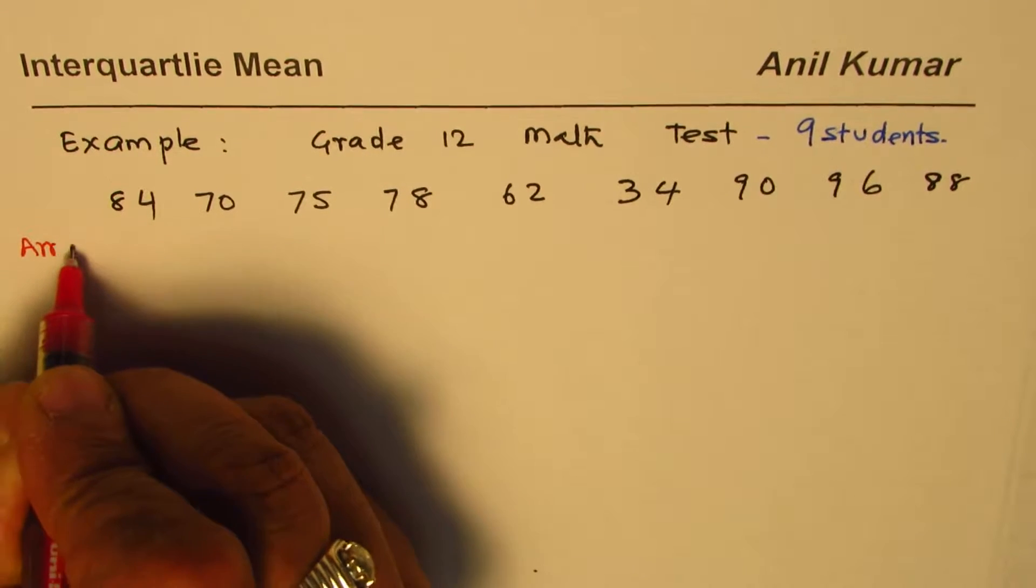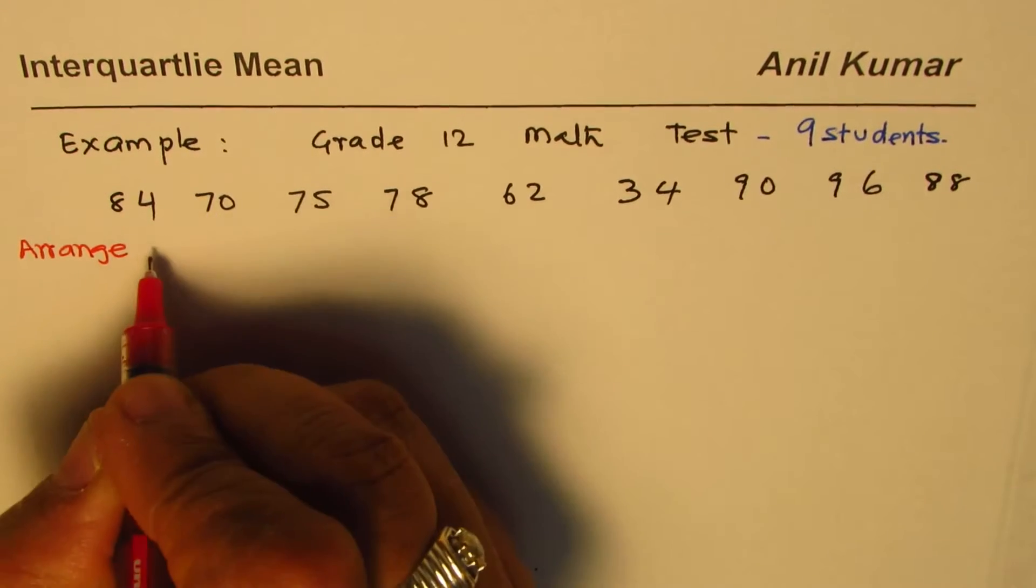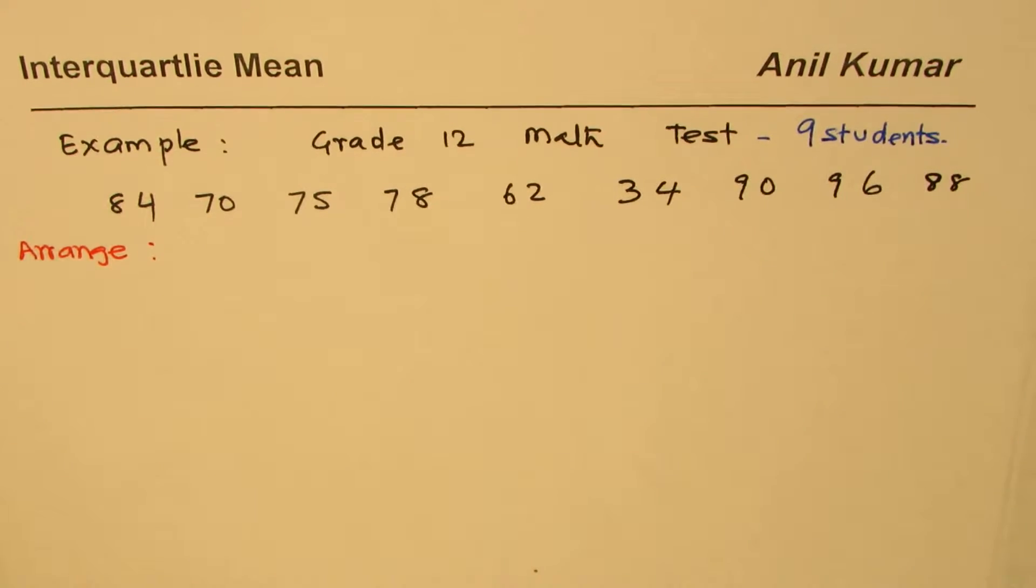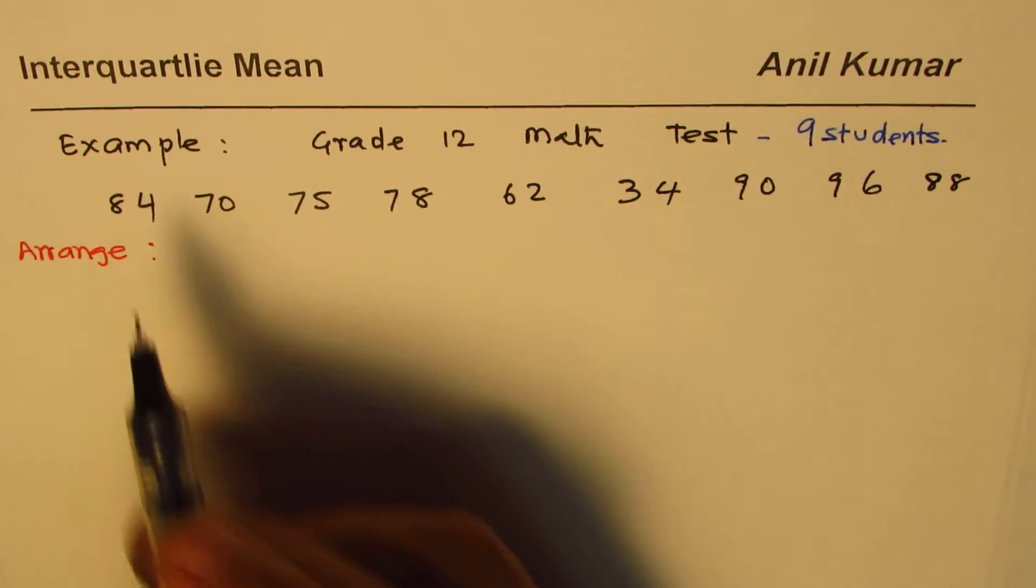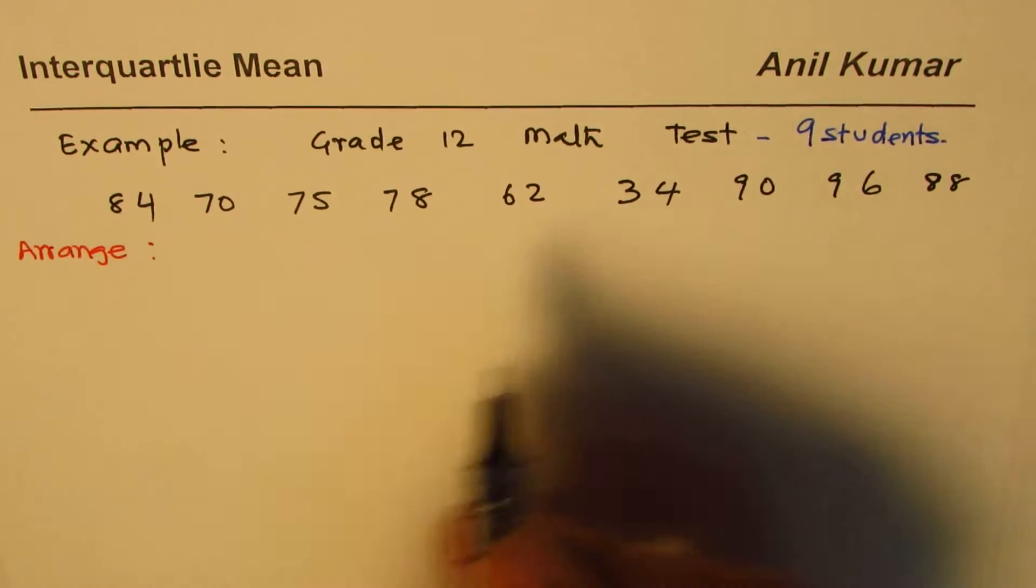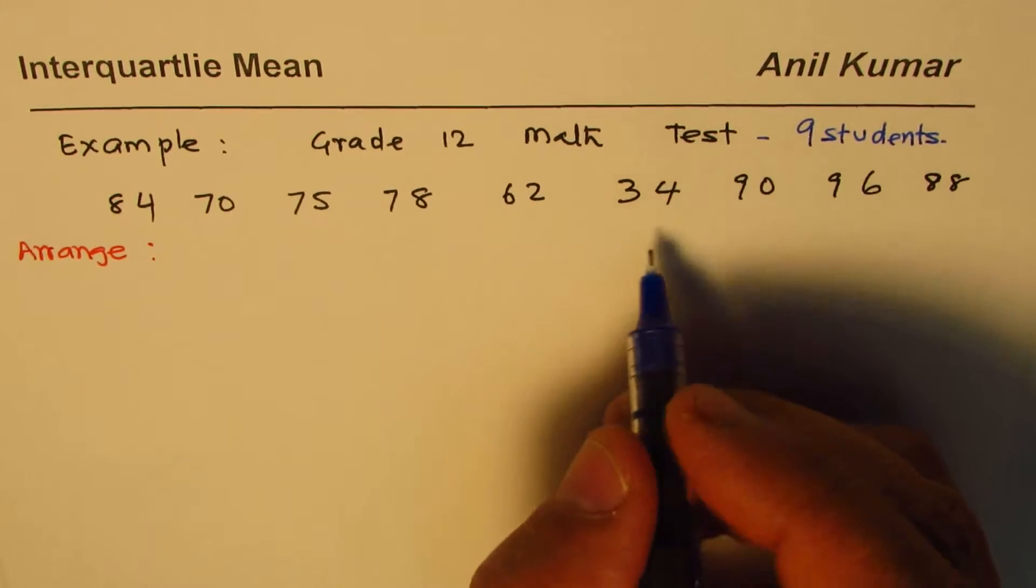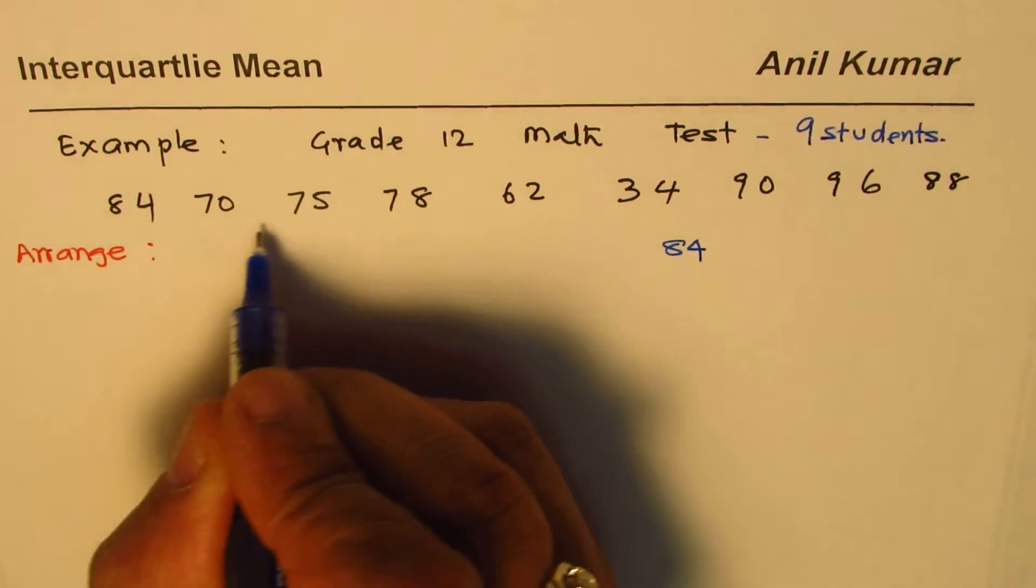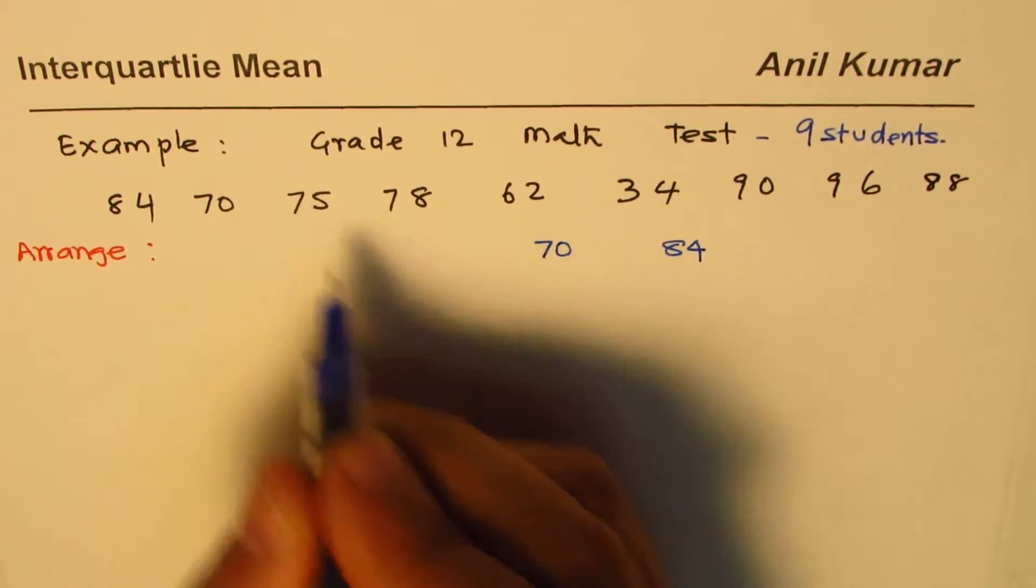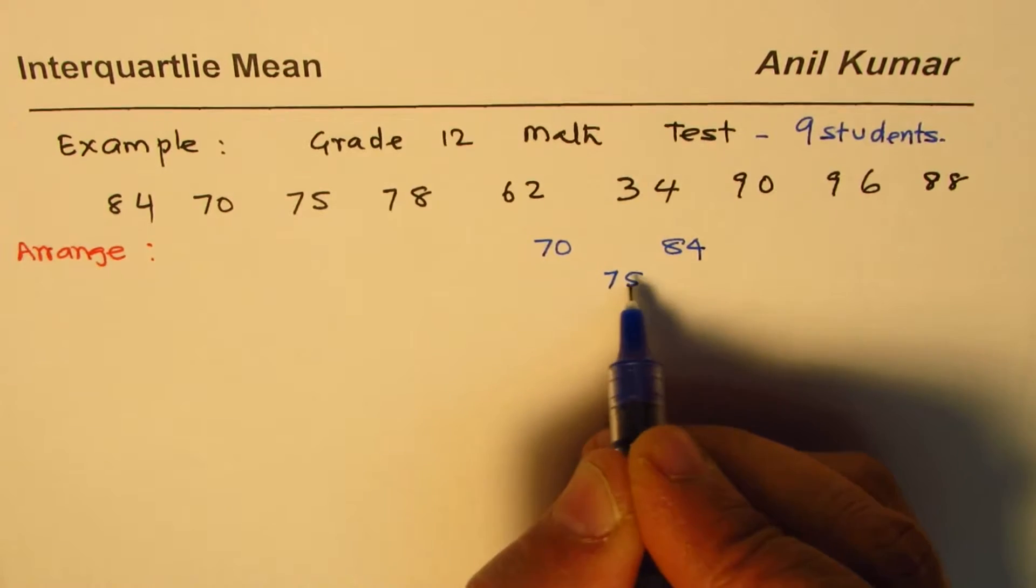So let's arrange these marks in increasing order. Let's pick up the marks. 84 seems to be higher, let me write down 84 on the right hand side. 70 here, 75 maybe in between, 78 correct, higher than 75.